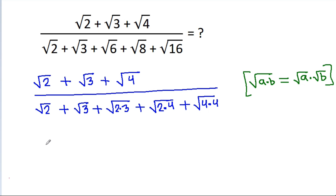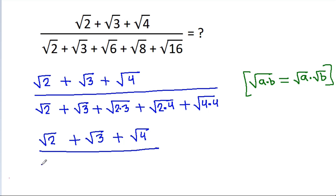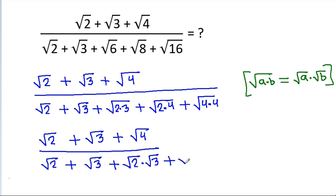So the denominator becomes: √2 + √3 + (√2 × √3) + (√2 × √4) + (√4 × √4), expanding each term using the product rule for square roots.